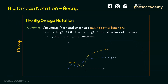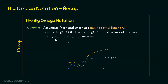This is the definition of the big omega notation, which we already know. According to this definition, assuming Fn and Gn are non-negative functions, Fn is big omega of Gn if and only if Fn is greater than or equal to C times Gn for all values of N where N is greater than or equal to N0, and C and N0 are constants. From the graph, it is clear that Gn is the lower bound of Fn — after N0, Fn grows asymptotically bigger than Gn.